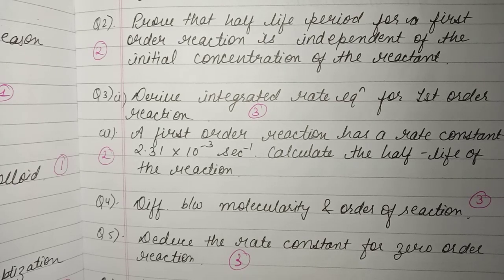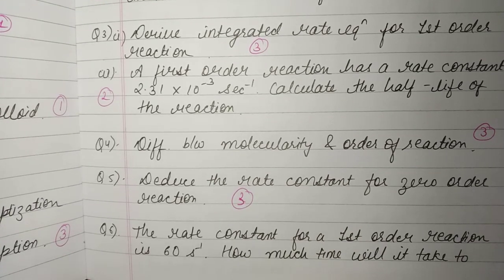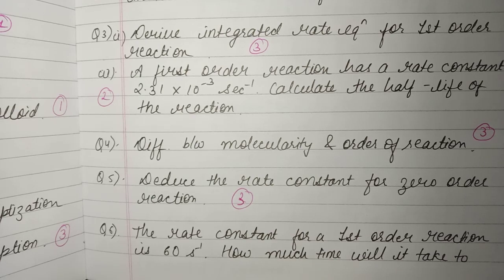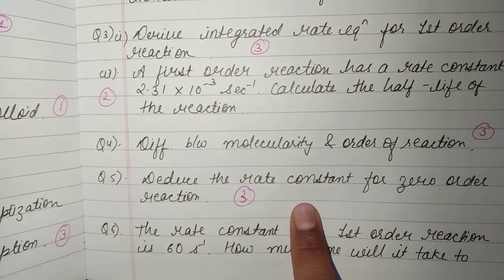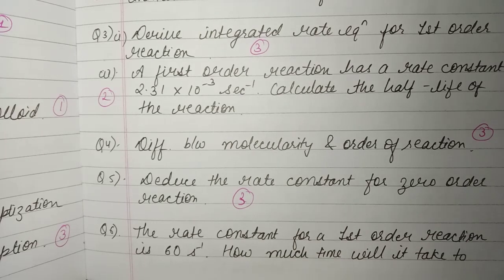The fifth and most important question is to differentiate between molecularity and order of a reaction — this is a three-mark question. After that, the sixth question is to deduce the rate constant for a zero order reaction, where you have to do the integrated rate equation for zero order.